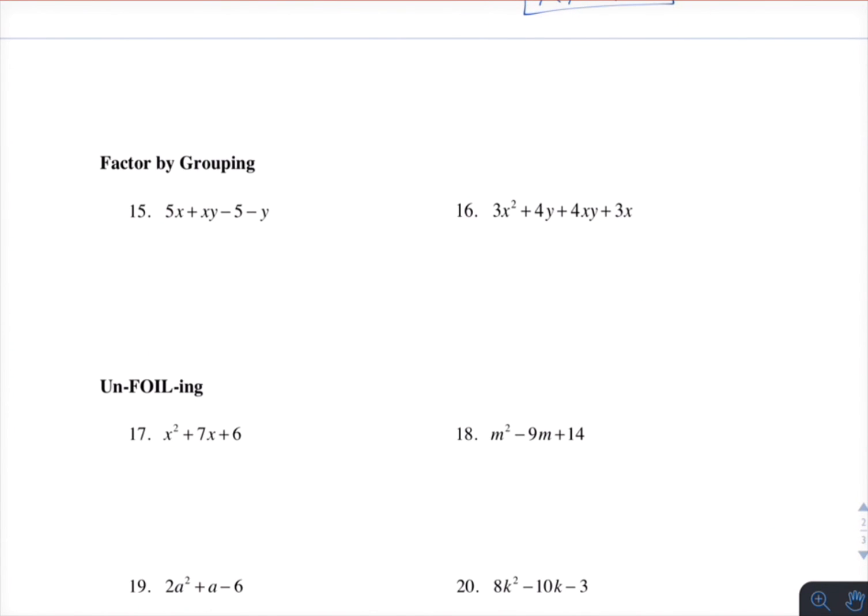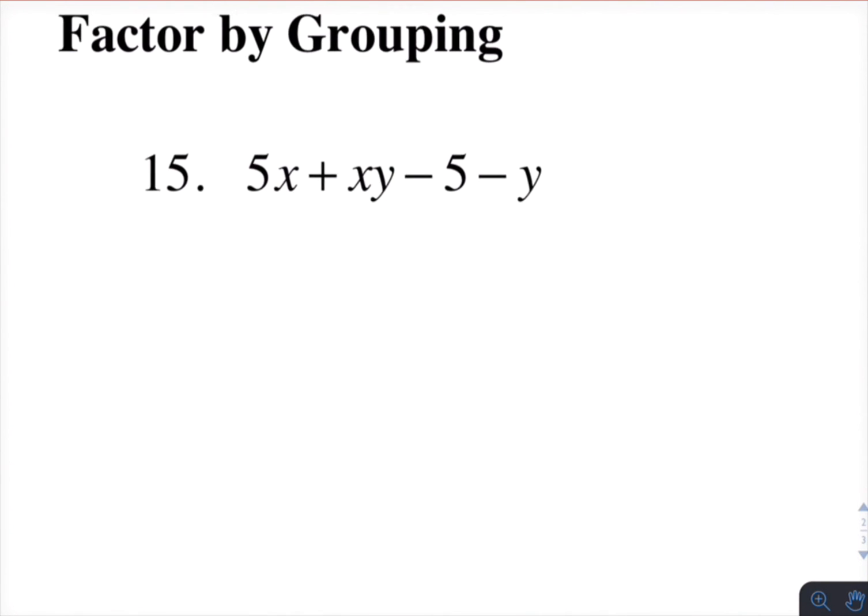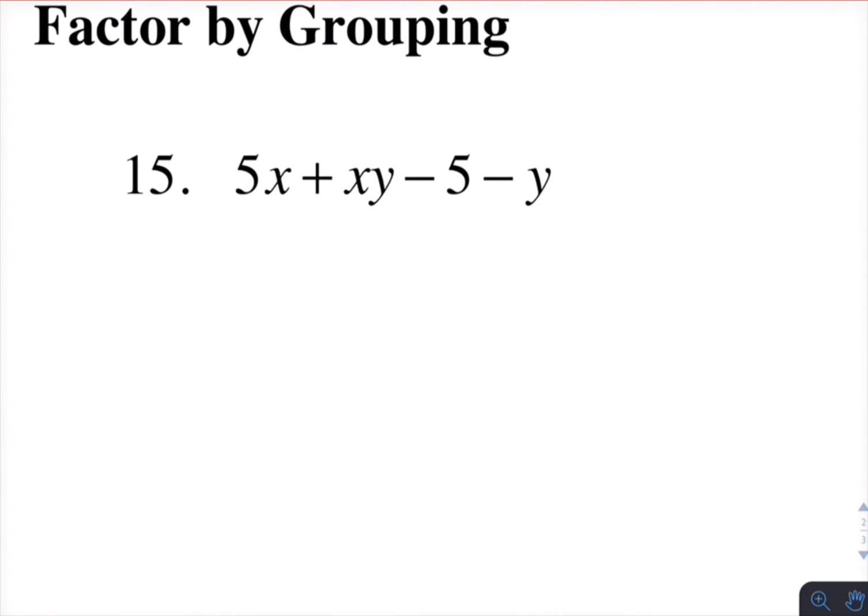Okay, so that takes care of the special products. Now we're going to talk about factor by grouping. Often used when there are four terms in the polynomial. We look at them two terms at a time. So if I look at the first two terms, they have an x in common. Factor the x out of those two. And you get 5 plus y.